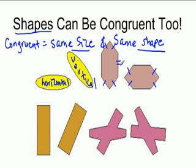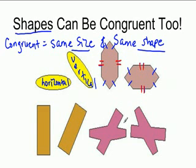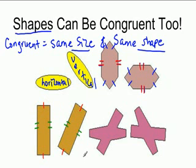Now, this line is a different length, so I'm going to put two slashes because it's not congruent to the first side. These two lines are the same length and these two lines are the same length. I'll make this a different color. Two different size lines, so I make two different slash marks. Now look at this shape down here. This side is the same length, this is the same length, this is the same length, and this is the same length. Then we have our long sides the same length, and our long sides are the same length.